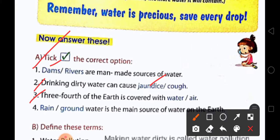Three-fourths of earth is covered with water or air. Answer is water. Next: rain or groundwater is the main source of water on the earth. Answer is rain.